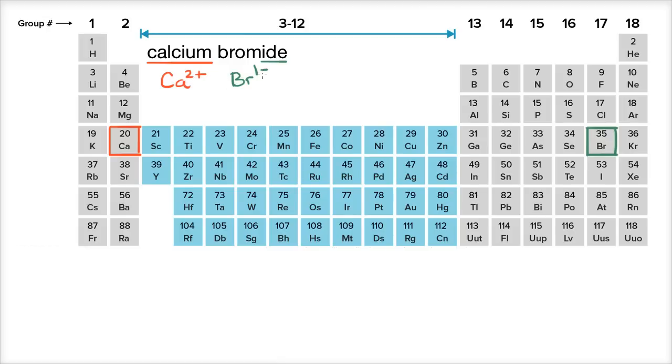Well, you have two plus here. You only have one minus here. So you're going to have to have two bromides for every one of the calcium ions. So for every one of the calciums, you're going to have two bromides. So it's going to be like this, CaBr2. And there you have it. That is the chemical formula for calcium bromide.